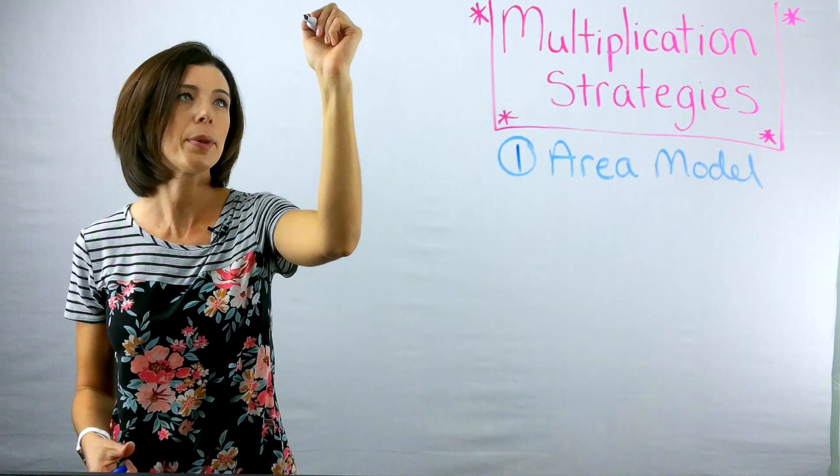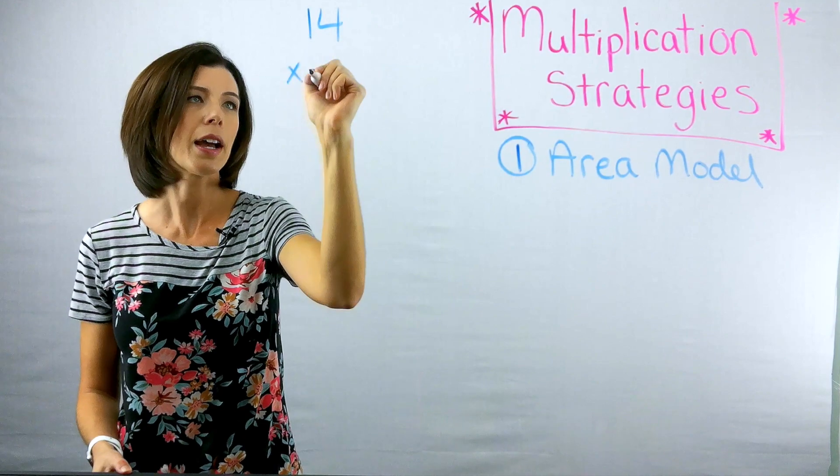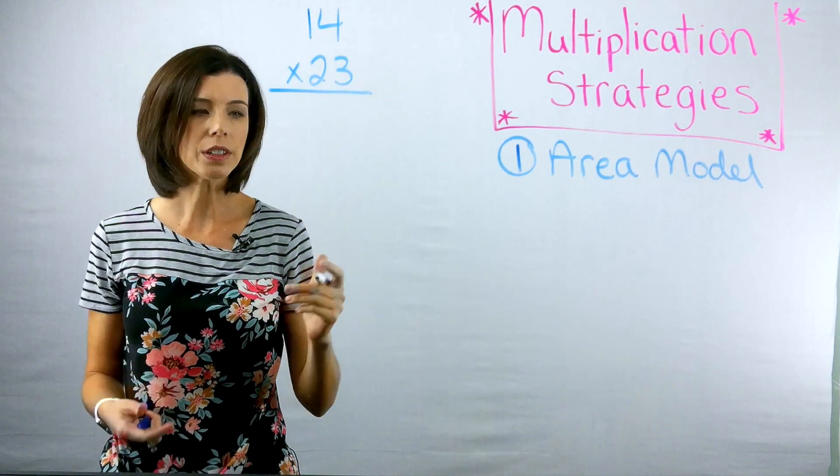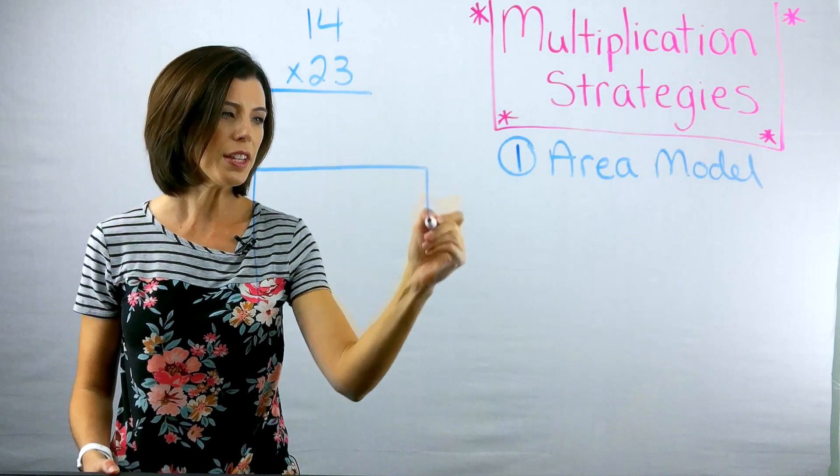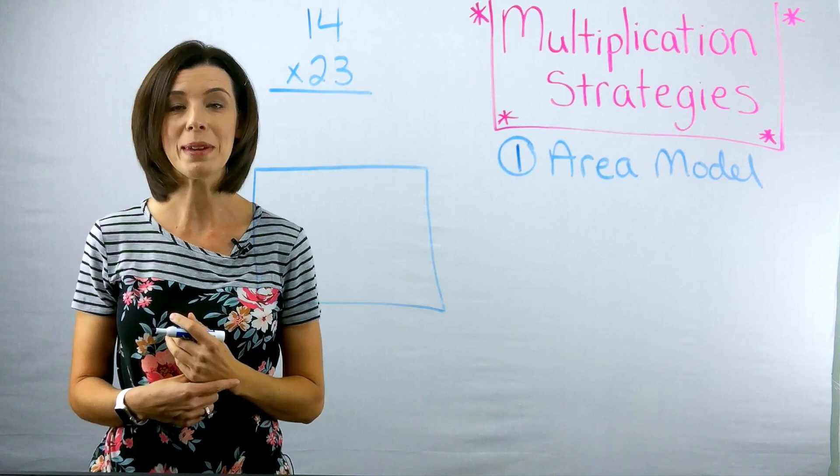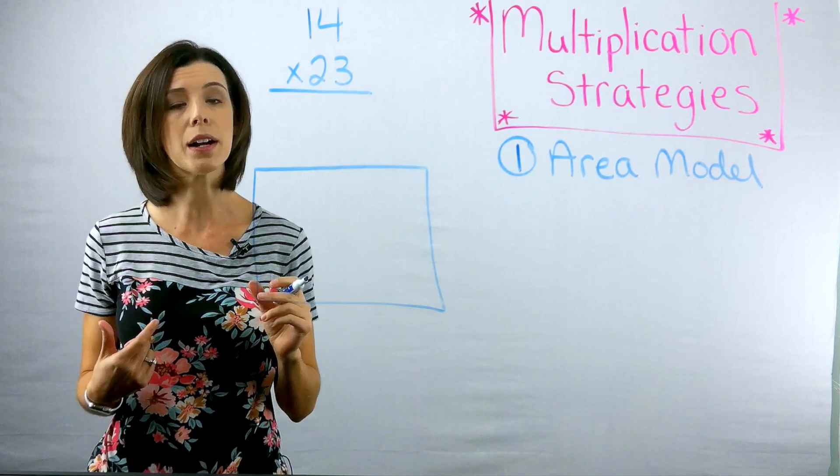Let's take for example, the problem 14 times 23. When we're doing the area model, we're literally going to start by drawing, you can think of it as a big room or a big rectangle, and we're literally going to be splitting this area up based on place value.